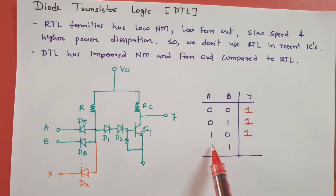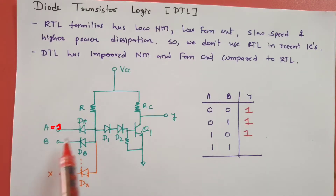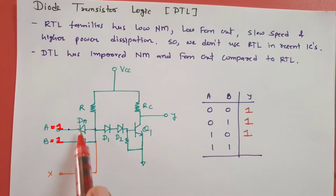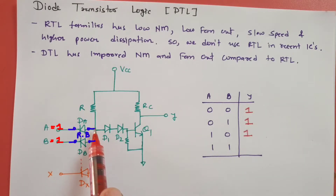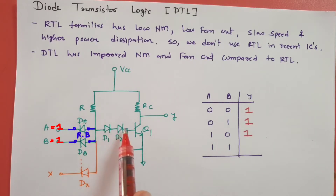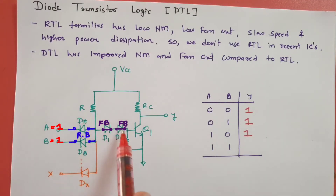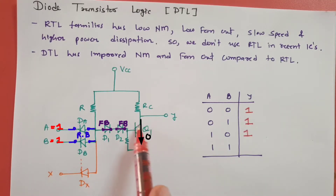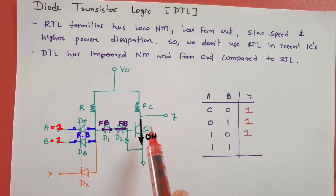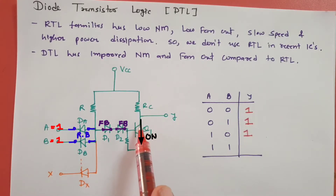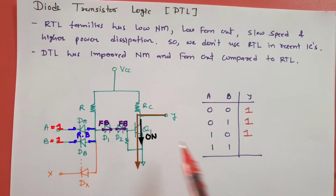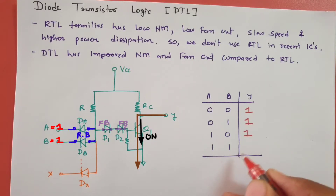In the fourth case, A = 1 and B = 1. Both DA and DB are in reverse bias. VCC now finds a path that turns D1 and D2 on — forward bias. With D1 and D2 forward biased, base current flows into Q1, triggering it and turning it on. With Q1 on, the output voltage is VCE = 0.2V, which corresponds to logic 0.